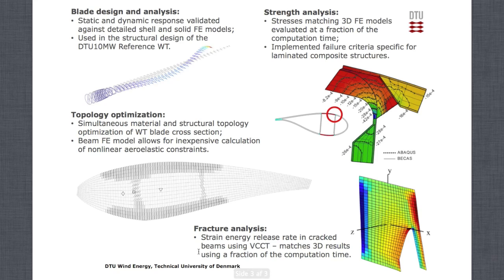The workflow has been used for blade design and analysis. An example is that it has been used for the design of the recently released DTU 10 MW reference wind turbine. The blades were designed using BIKES — the stiffness properties and the whole strength analysis were carried out inside BIKES, and validated against shell models and solid finite element models. BIKES has also been used for topology optimization of wind turbine cross-sections.